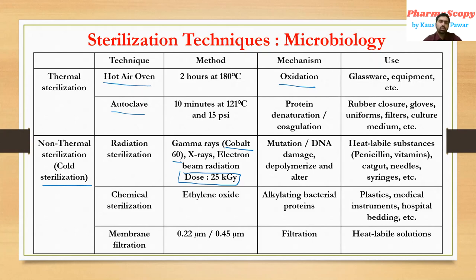For chemical sterilization, we use ethylene oxide gas. The mechanism of action is by alkylating the bacterial proteins — that is important. Ethylene oxide gas is used for plastic materials, medical instruments, and hospital beddings.